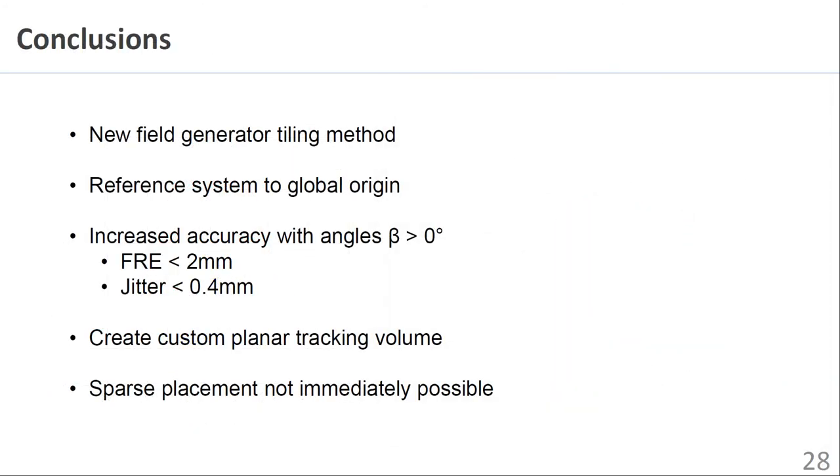In summary, this work describes a new field generator tiling method for electromagnetic tracking. The method operates by referencing additional field generators to a common origin. We show that introducing tilt angles between adjacent field generators reduces positional and jitter error. The work allows custom tracking volumes to be built, although sparse tiling of field generators is not immediately possible with this design.